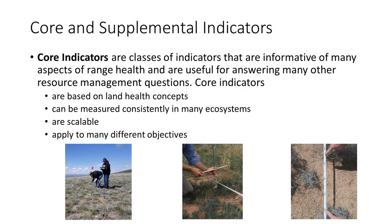For local monitoring needs, indicators can be selected for each project individually. However, when monitoring at regional or national scales, or where data may address multiple resource objectives or need to be combined, we can divide indicators into two sets: core and supplemental. Core indicators are classes of indicators informative of many aspects of range health, useful for answering many resource management questions, based on land health concepts, consistently measurable in many ecosystems, scalable, and applicable to many management objectives. Ideally, core indicators should be measured whenever collecting monitoring data, and always in a consistent way.